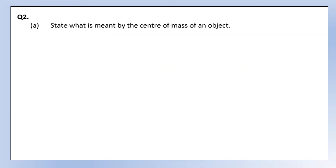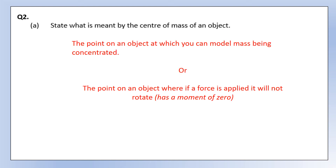Moving into a different topic area - moments and centre of mass. State what is meant by the centre of mass of an object. There are two ways to explain this: we can model the centre of mass as the point where we concentrate all the mass of the object and model it as a particle with zero volume, or it is the point on an object where if we apply a force it would have a moment of zero. Either is fine, but typically the first definition is the one we go for.